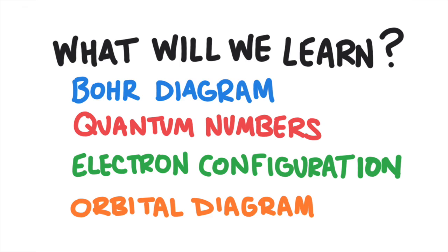In this lesson, we're going to learn different methods of showing where the electrons are around the nucleus of an atom. First we'll learn about Bohr diagrams, then we'll learn about quantum numbers, then we'll learn about electron configurations, and finally we'll learn about orbital diagrams.